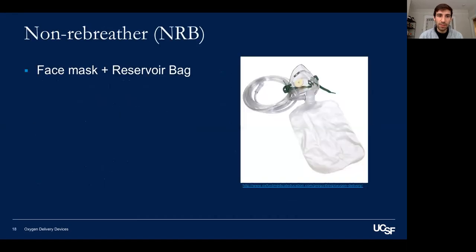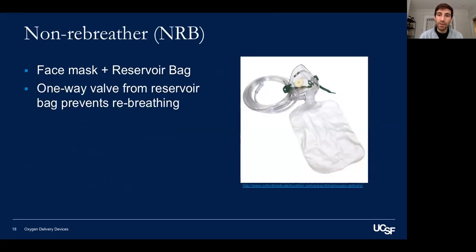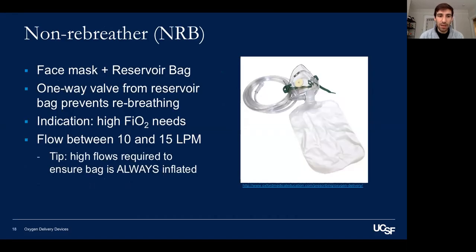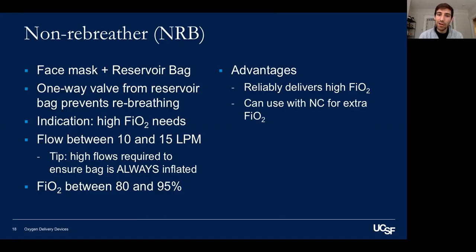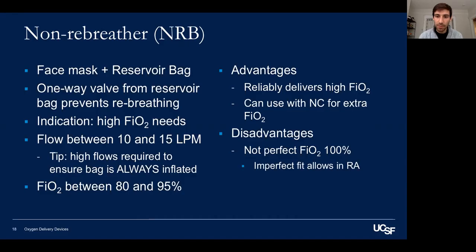A non-rebreather is a face mask with a reservoir bag. A one-way valve prevents re-breathing through the reservoir bag. It is often used for rescue hypoxemia situations requiring high FiO2. Flows are generally 10 to 15 liters per minute, and high flows are needed to keep the bag inflated at all times. FiO2 ranges between 80 and 95%. Advantages include reliably high FiO2, and you can add a nasal cannula underneath for an extra FiO2 bump. Downsides are that it's not a perfect 100%, allows some room air entrainment, and is generally a rescue therapy — so non-invasive ventilation should be considered for prolonged use.